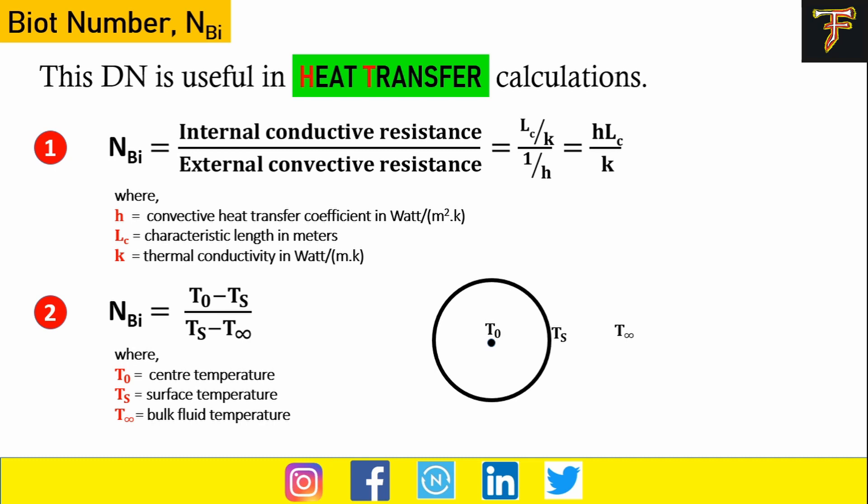In this case, you can give the Biot number as the temperature gradient from the center of this ball to the surface, divided by the temperature gradient from the surface to the ambient condition. This is how you define the Biot number here.